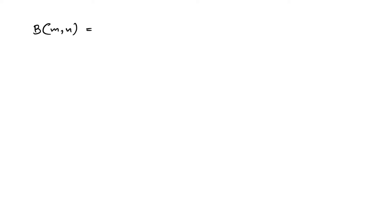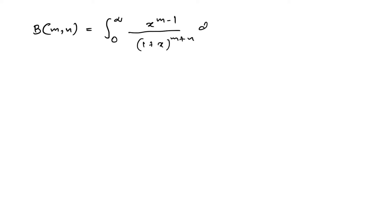First, we take the beta function. We know that beta(m, n) is equal to the integral from zero to infinity of x^(m-1) over (1+x)^(m+n) dx. We can also represent the beta function using the gamma function: gamma(m)·gamma(n) over gamma(m+n).